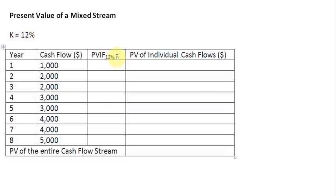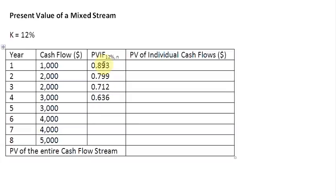So now, if we go to the PVIF tables and read the column for 12%, for the first year the interest factor is 0.893. For the second year, it is 0.799. For the third year, it is 0.712. For the next one, it is 0.636. Let us also write down the others: 0.567, then we have 0.507.